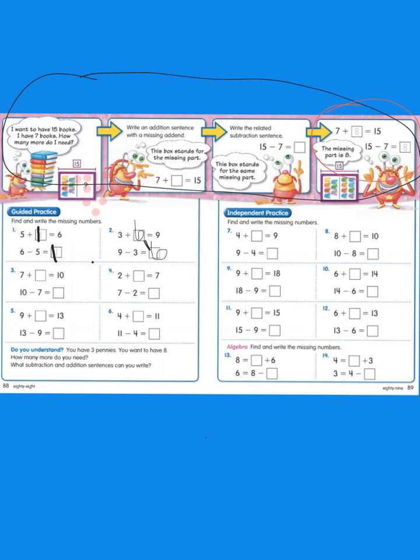Okay, let's look at number 3. 7 plus what equals 10? Catch 7, count up to 10. 10 minus 7 will also give us our answer. So let's catch 7, count up to 10. Get your catching hand out. 7, 8, 9, 10. How many fingers do you have up? 3. So 3 goes in the box.